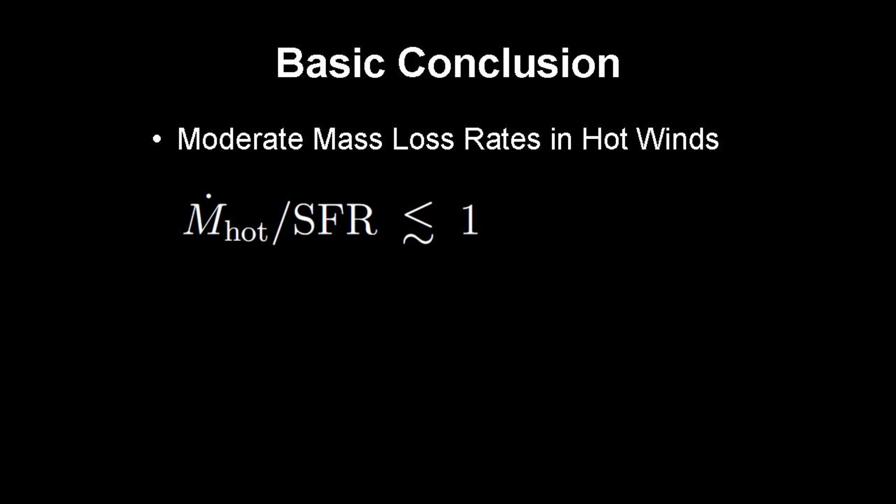Here, I highlight a basic conclusion in our paper. Only moderate mass loading rates are allowed by Chevalier-Clark model, combined with the x-ray observation. For star formation rate greater than 10 solar mass per year, beta is always less than the order of magnitude of 1. This estimate is lower than beta required by galaxy formation models.